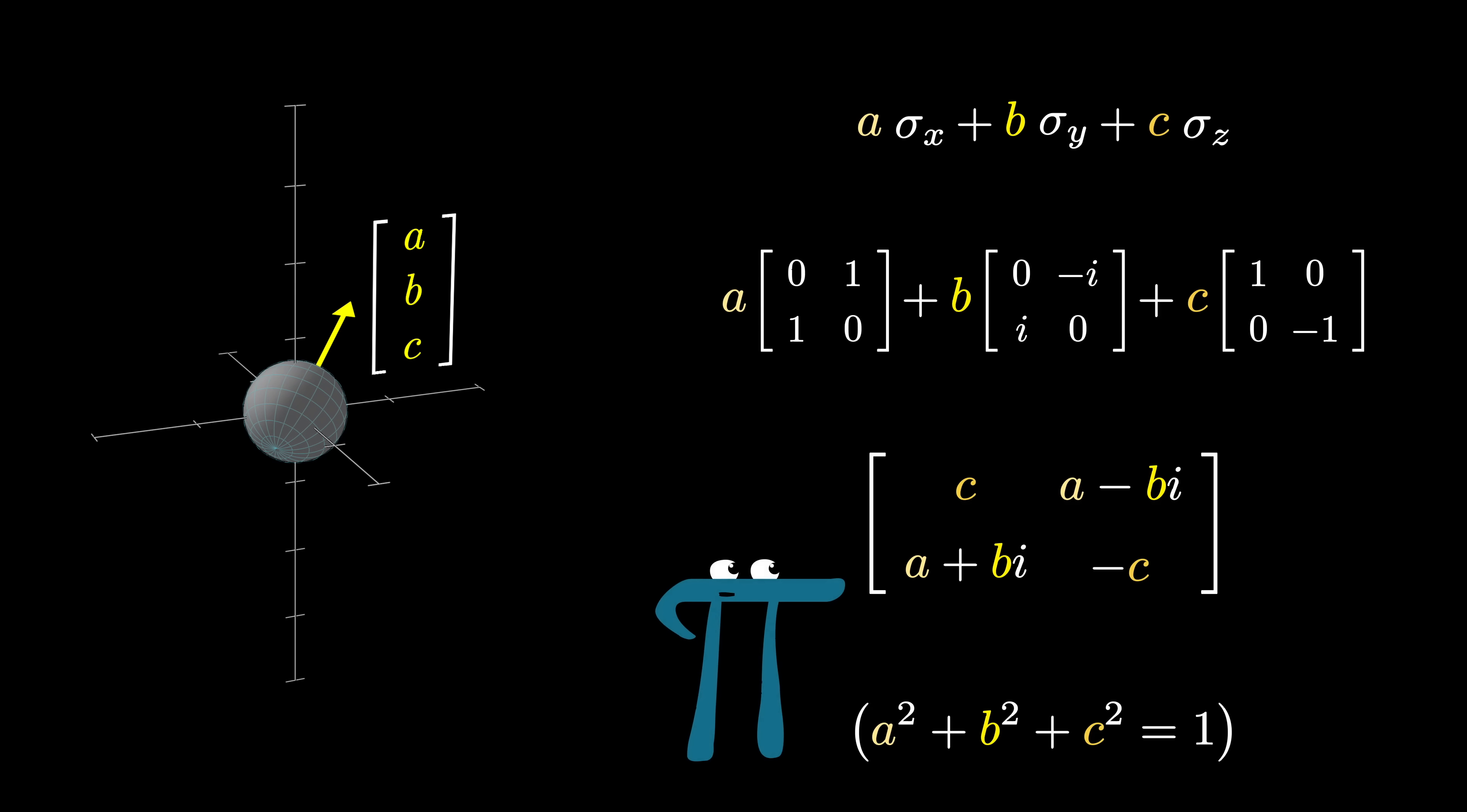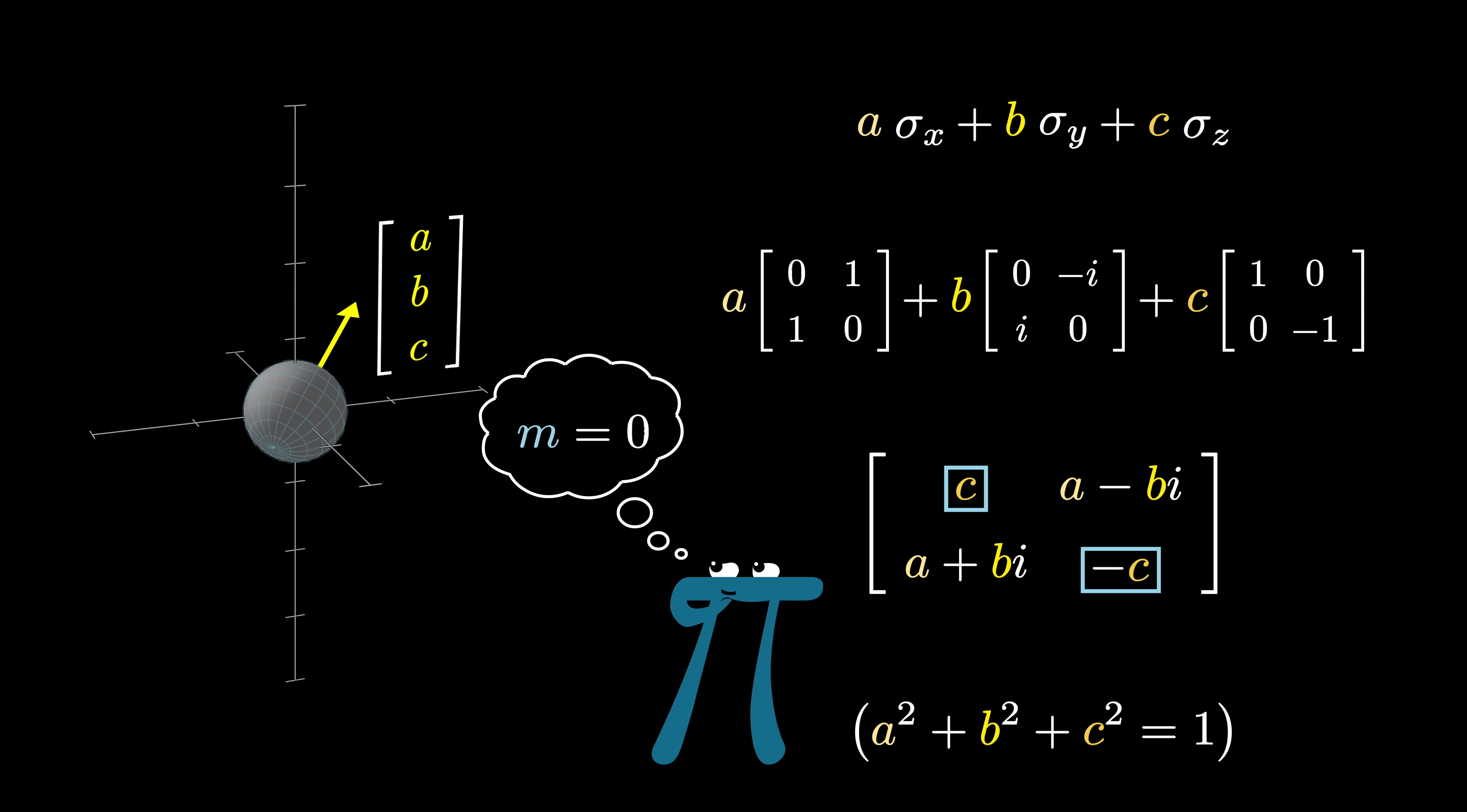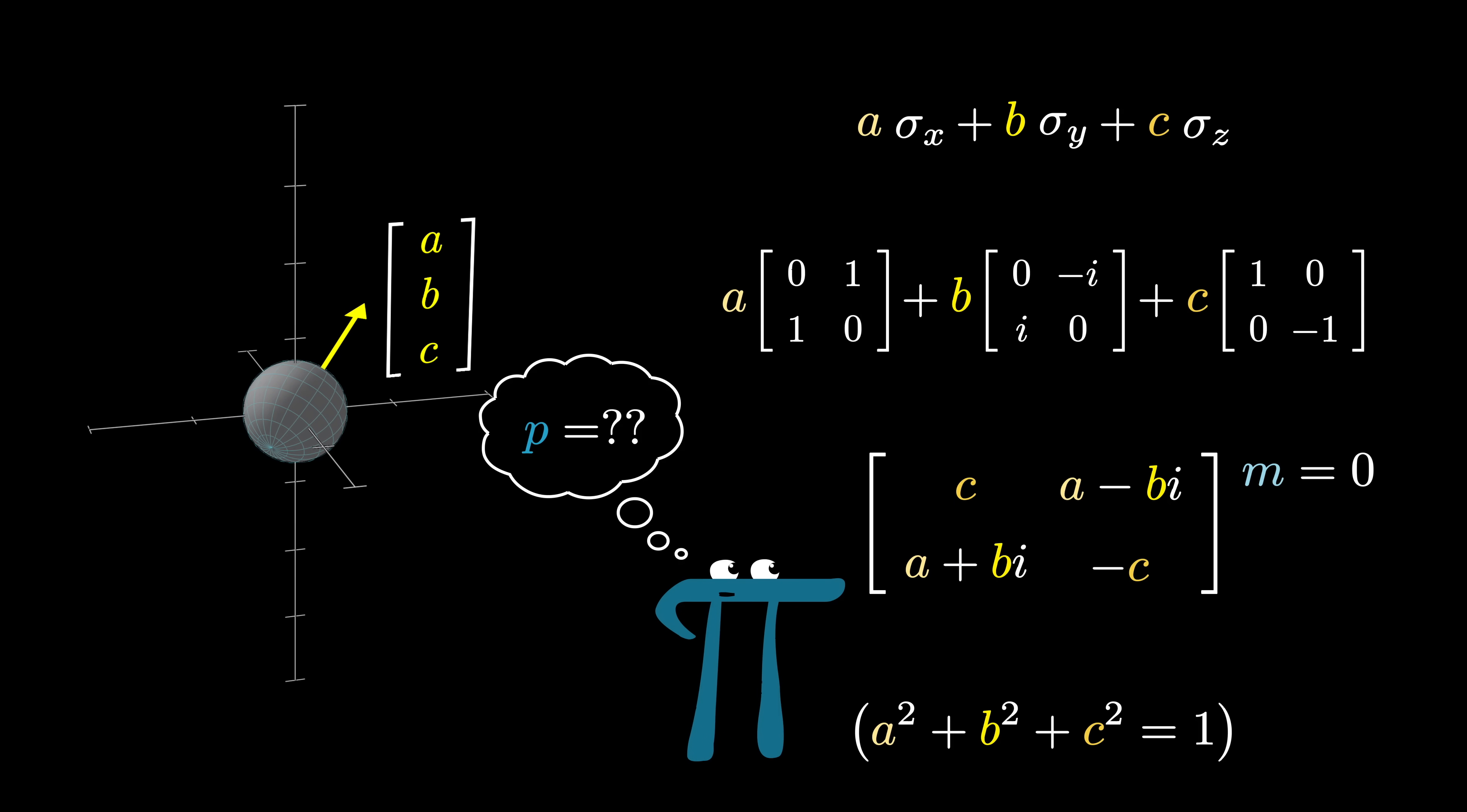When you look at this new matrix, it's immediate to see that the mean of the eigenvalues is still zero. And you might also enjoy pausing for a brief moment to confirm that the product of those eigenvalues is still negative one. And then from there, concluding what the eigenvalues must be.